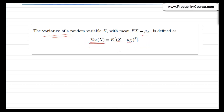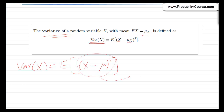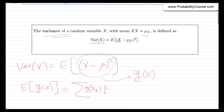To calculate the variance, we use the expected value of (x − μ)². Note that (x − μ)² is a function of x — call it g(x) = (x − μ)². So this is the expected value of a function of x, and we know how to calculate that using the law of the unconscious statistician (LOTUS): the sum of g(x_k) times the probability that x equals x_k.